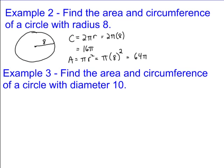Example 3 gives you a diameter instead of a radius. It says find the area and circumference if your diameter is 10. Well, remember that if your diameter is 10, that means all the way across is 10. That means your radius, which would be halfway, is always half that, which would be, in this case, 5.